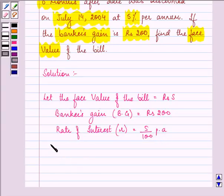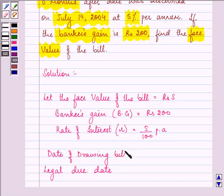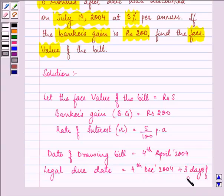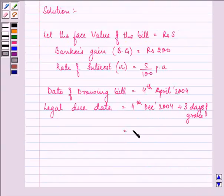Now, let us find out the due date of the bill, that is the legal due date. We are given the date of drawing the bill as 4th April 2004. So the legal due date of the bill will be for 8 months, 4th December 2004 plus 3 days of grace. So it is equal to 7th December 2004. The period of this bill was 8 months.